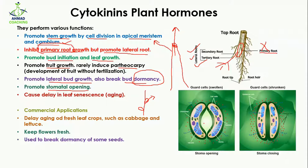Cytokinin promotes stomatal opening. When cytokinin is present, it activates the opening of stomata. It also causes a delay in leaf senescence, meaning it prevents leaves from becoming old, as happens in autumn.